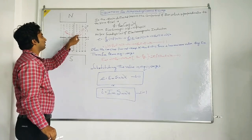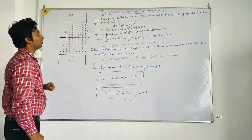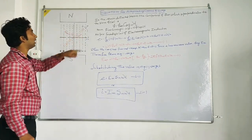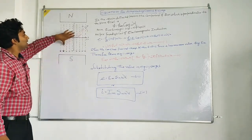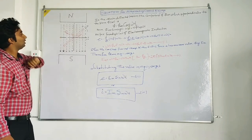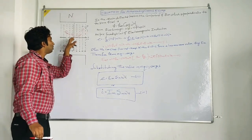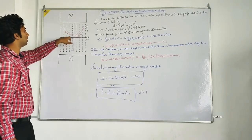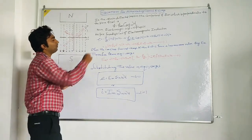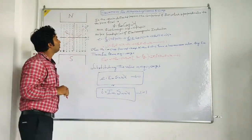Now this conductor starts rotating with angular velocity of omega in this particular direction. So in this deflected position the component of the flux which will be intersected with this coil will be phi equal to phi m cos omega t.